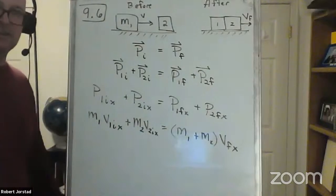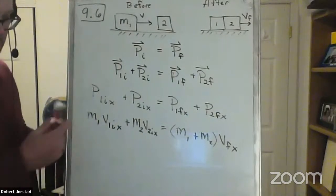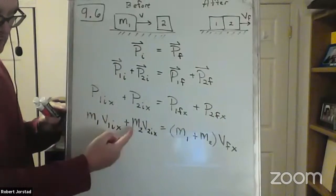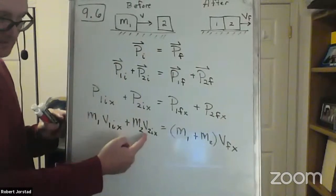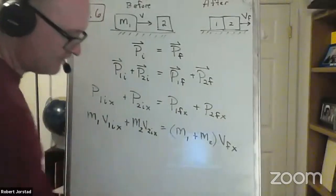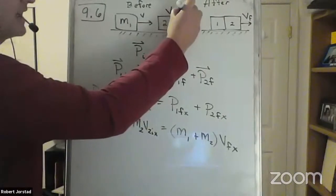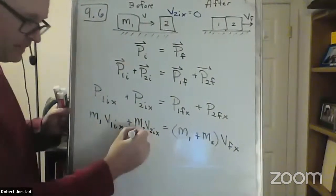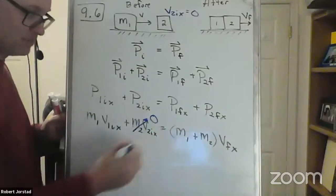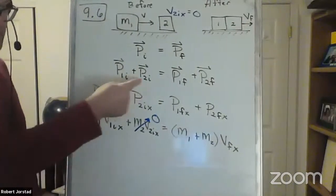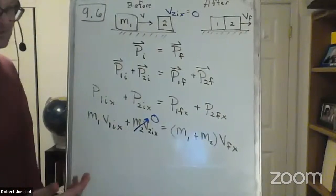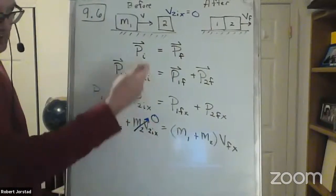Now we have an equation we can work with — we have masses and speeds. This should be positive. What is this V2 initial x term in this case? Zero. So V2 initial x equals zero. Generally speaking, one of the first things we do is plug in the zeros — it saves a lot of writing. If you know something is zero, plug it in right away.